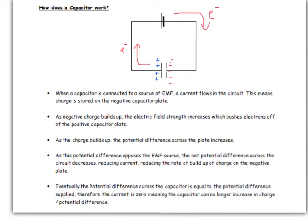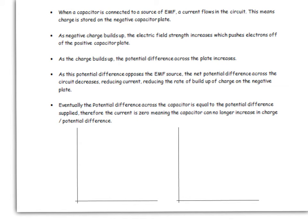Once they reach the same potential difference, there will be no net flow of charge, so the capacitor is now fully charged. Let's have a look at that graphically. We're going to plot two graphs: charge against time, and potential difference against time — both for charging. Initially, you've got your maximum potential difference across the capacitor, or that net potential difference, because your capacitor has zero potential difference and your EMF is its fixed value. With maximum potential difference for the same resistance, you're going to have maximum current, or maximum rate of flow of charge. So the gradient of your charge versus time graph is at its maximum.